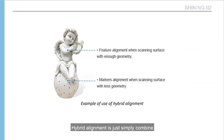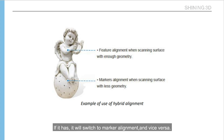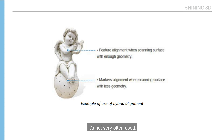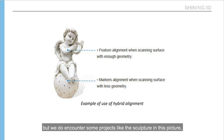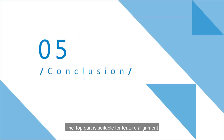Hybrid alignment simply combines feature alignment with marker alignment. Before each frame it takes, it will check if there are any markers — if there are, it switches to marker alignment, and vice versa. It's not very often used, but we do encounter some projects like the sculpture in this picture, where the top part is suitable for feature alignment and the bottom part requires markers.